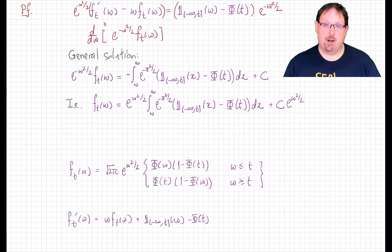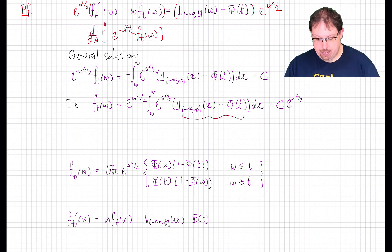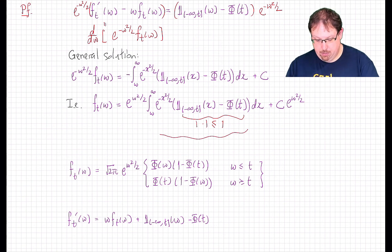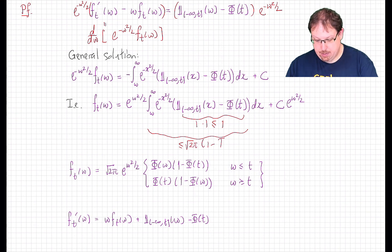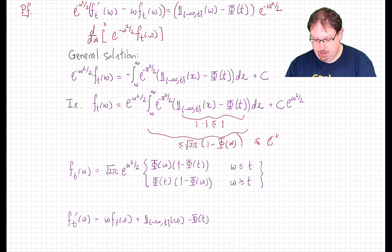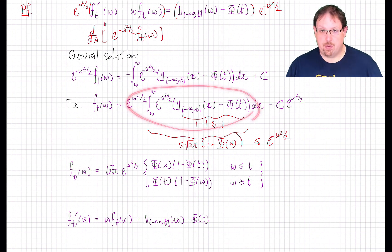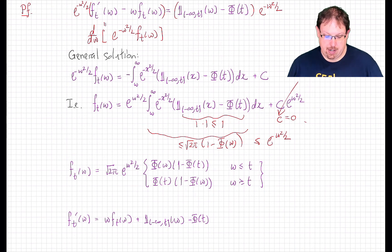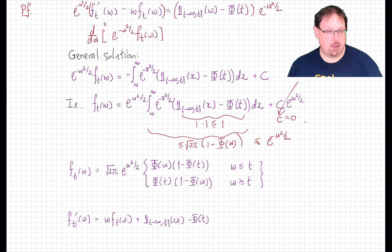We just need to show that the unique bounded solution has C equal to 0. The integrand inside here, excepting the Gaussian density, is less than or equal to 1 in absolute value, given that it's the difference between two functions taking values in [0,1]. This means the integral is less than or equal to the integral of just the Gaussian density with the root 2pi removed, so everything inside is less than or equal to root 2pi times 1 minus phi(w). Employing the bound from Lemma 1, that is less than or equal to e^{-w²/2}, which cancels to produce a bound of 1 for this term. So that term is bounded, and the only bounded solution is with C equals 0. We can actually solve this integral explicitly, and the answer has a kind of cute symmetry to it.